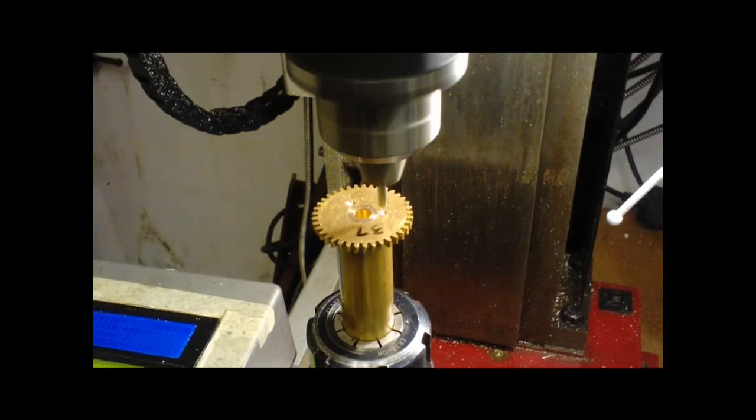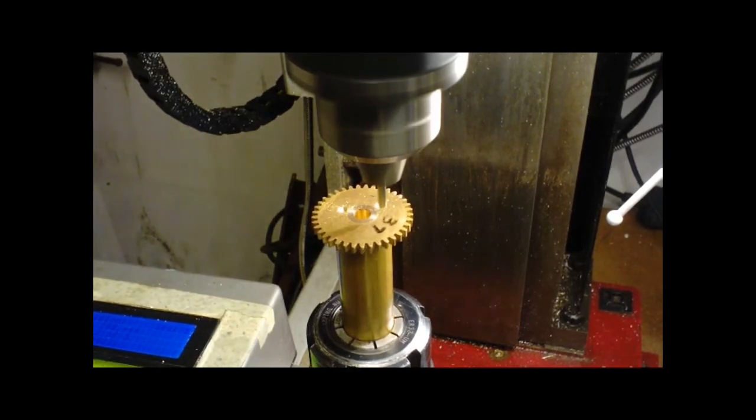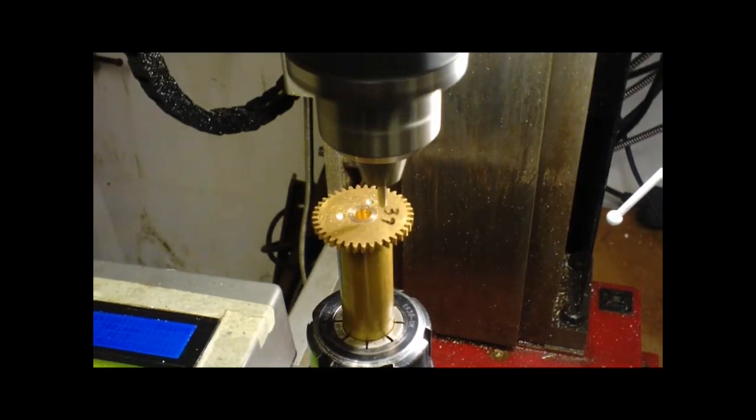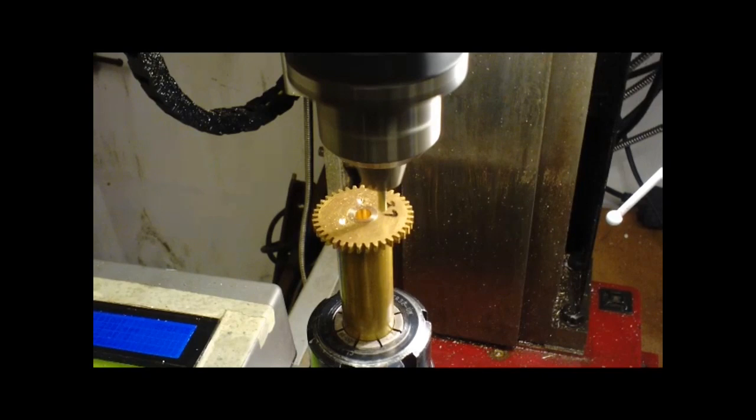You can see that I'm using my CNC automated dividing head again. There's more information about this in part one of the videos and I've also got a separate video on converting the rotary table. It's a standard 4 inch Vertex with a CNC adaptation.